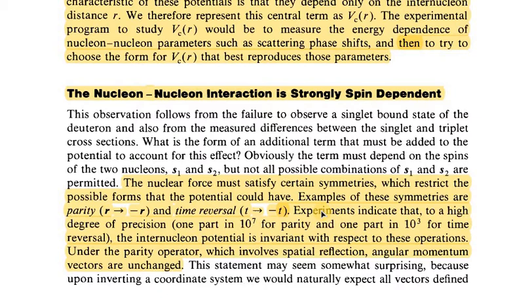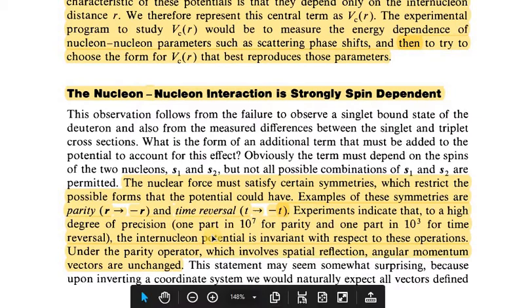Experiments indicate that to a high degree of precision, one part in 10^7 for parity and one part in 10^34 for time reversal, the internuclear potential is invariant with respect to these operations. Under the parity operator, which involves spatial reflection, angular momentum vectors are unchanged.